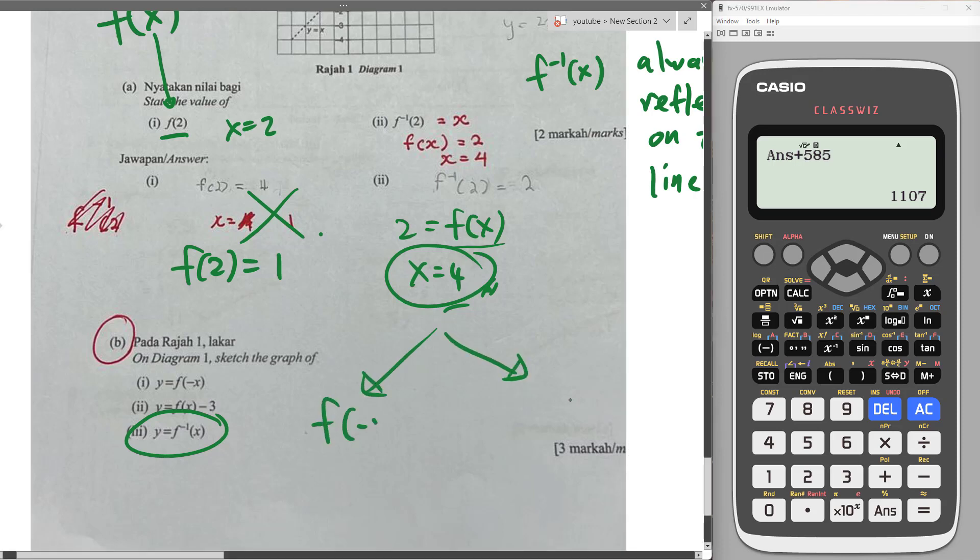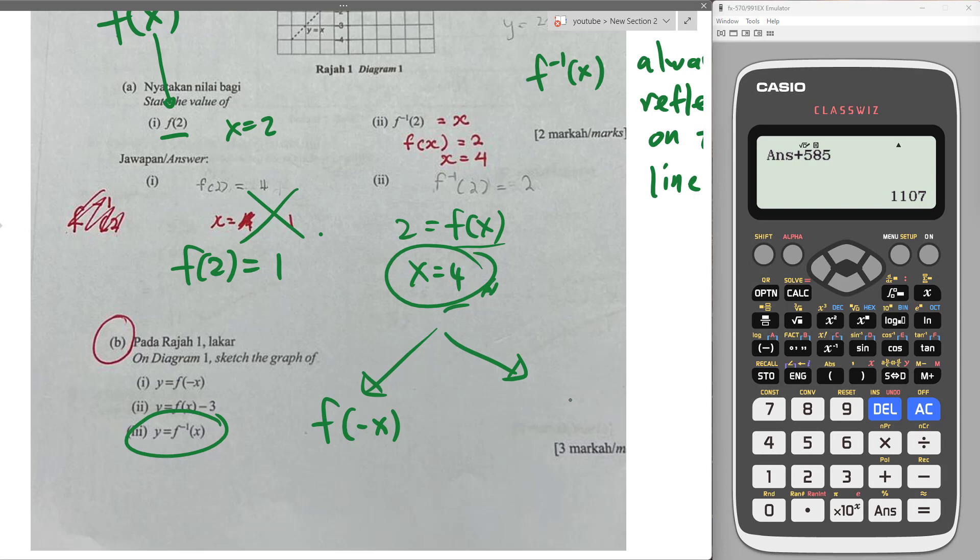Okay, this one, so you have two types. I want you to recognize these two types. So if you see negative inside the bracket, this one means reflection on y-axis.